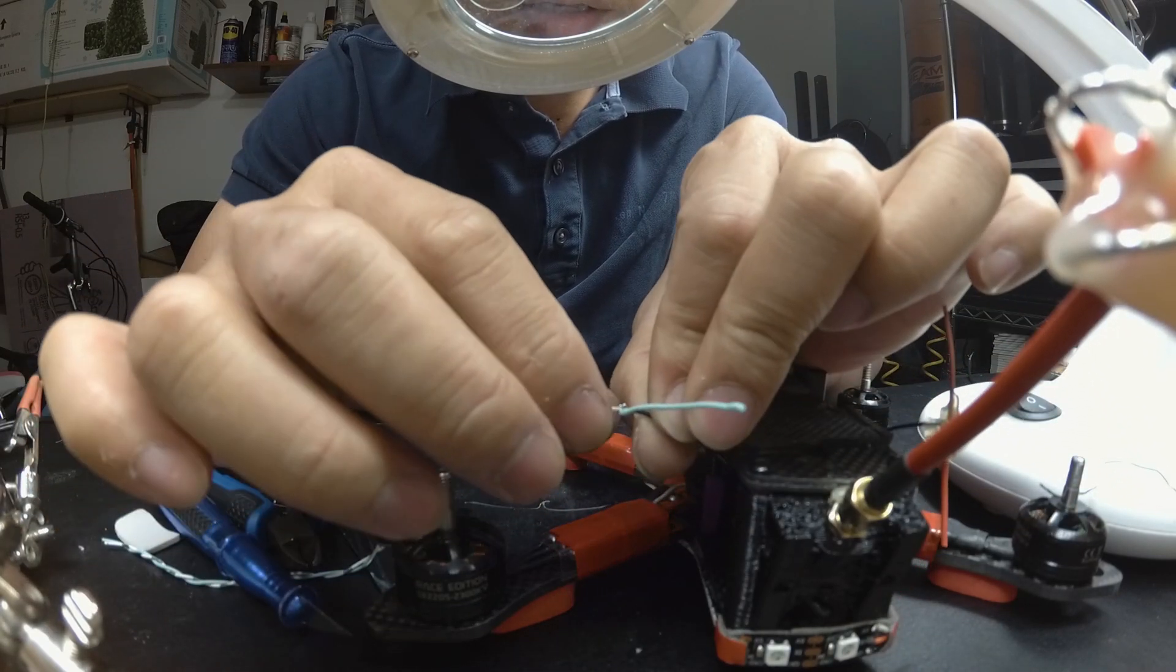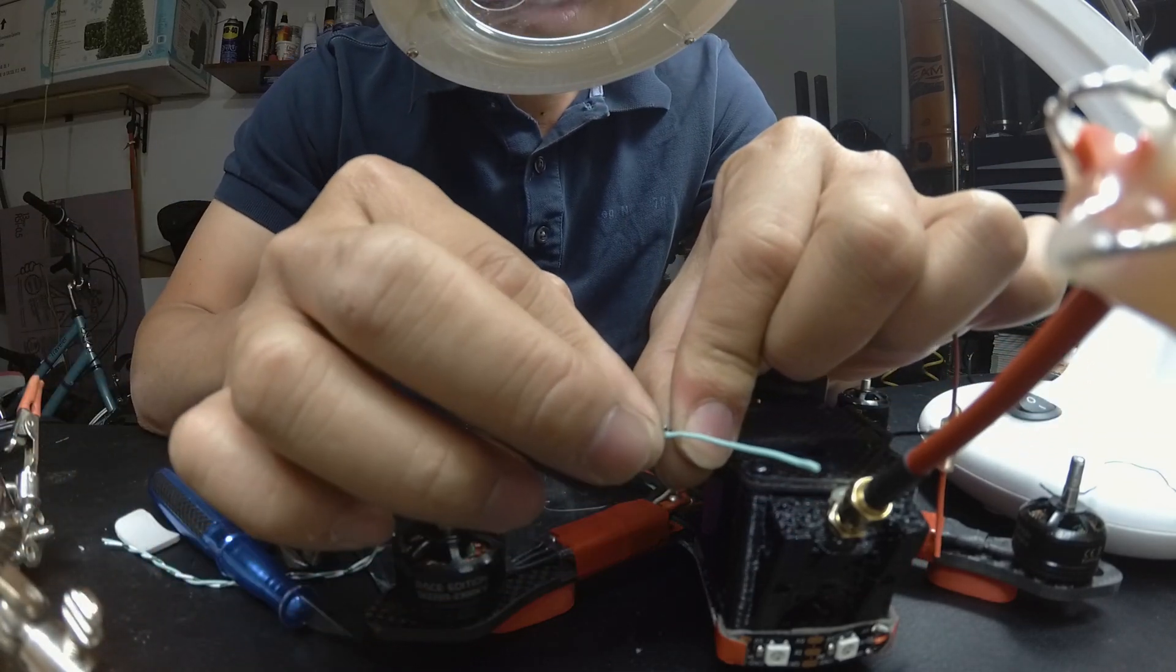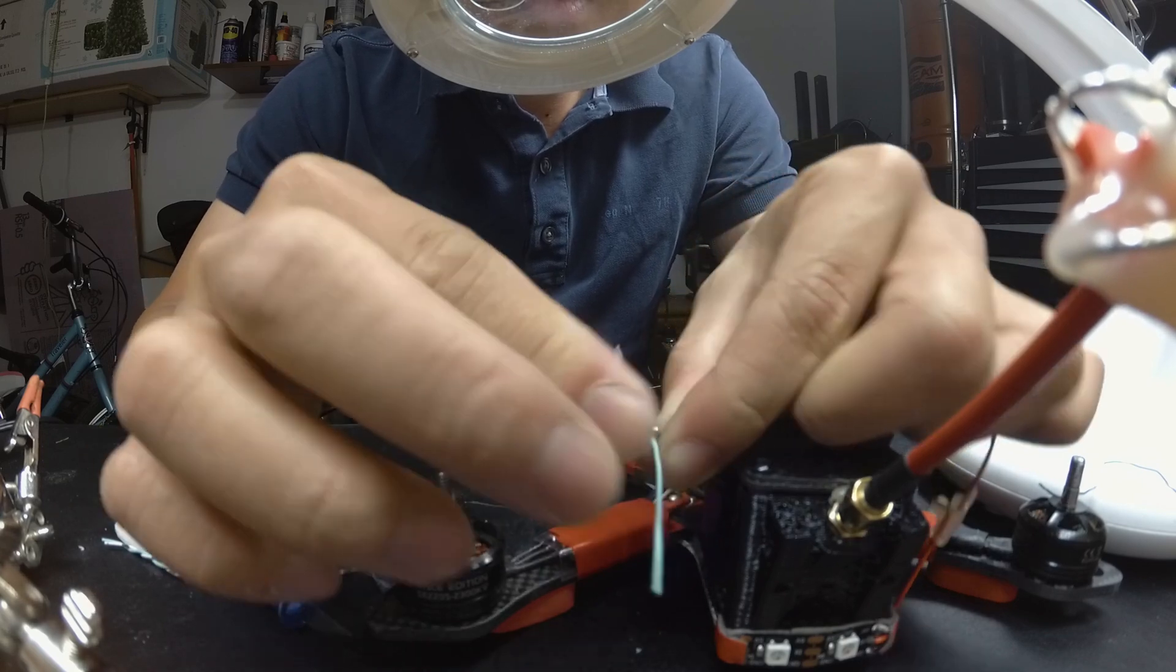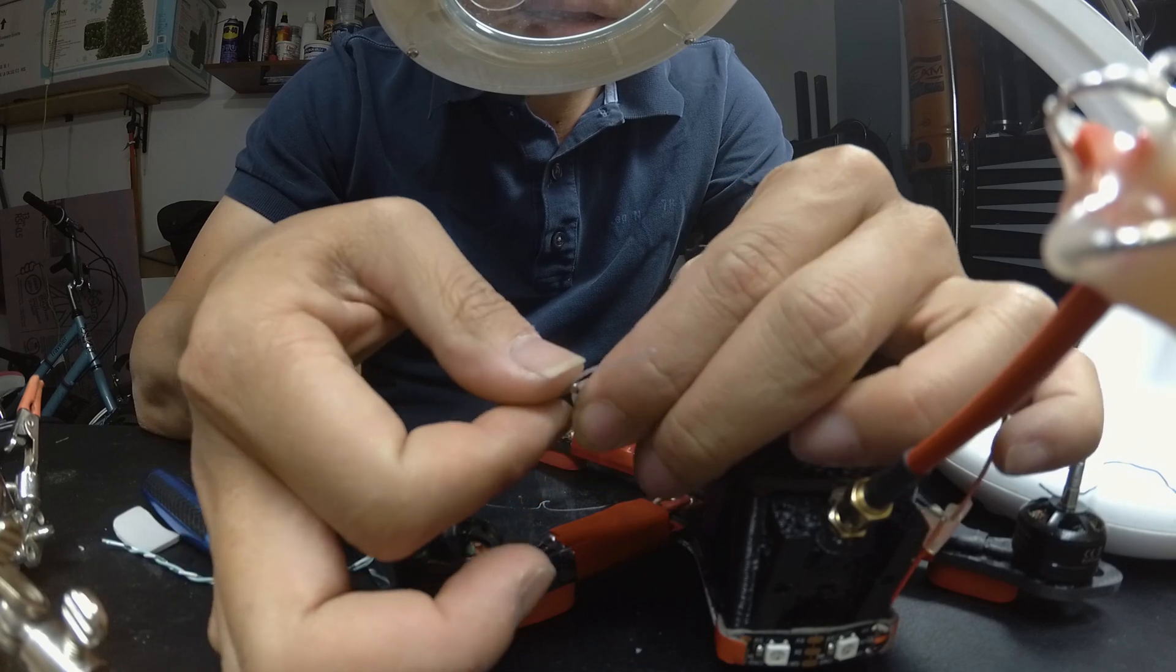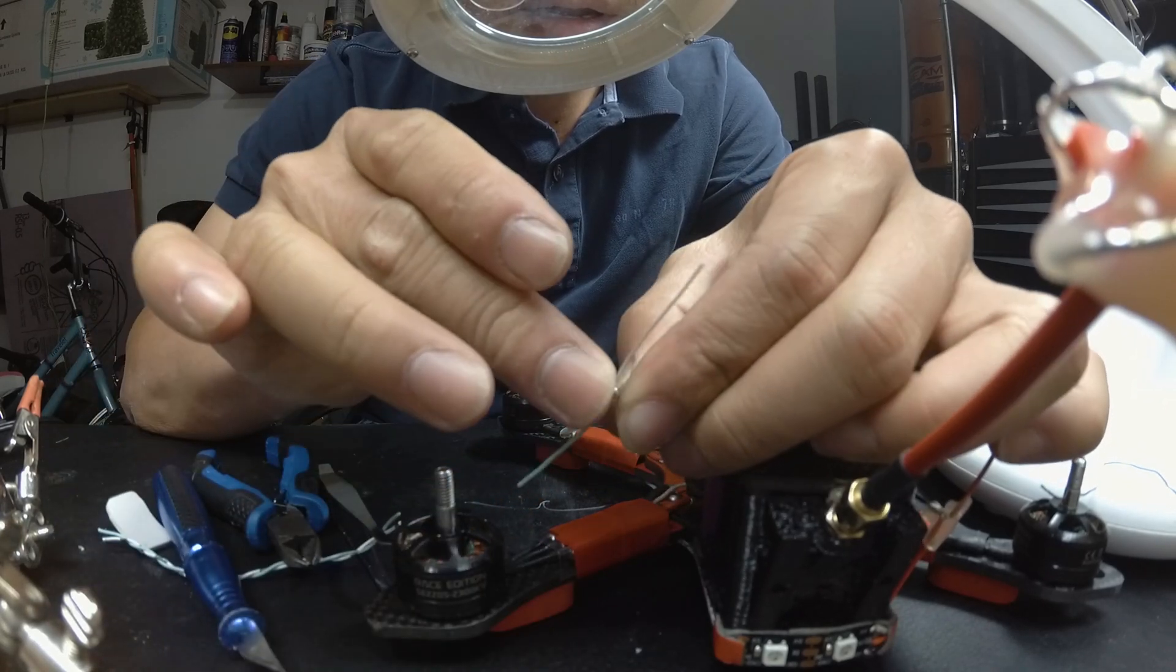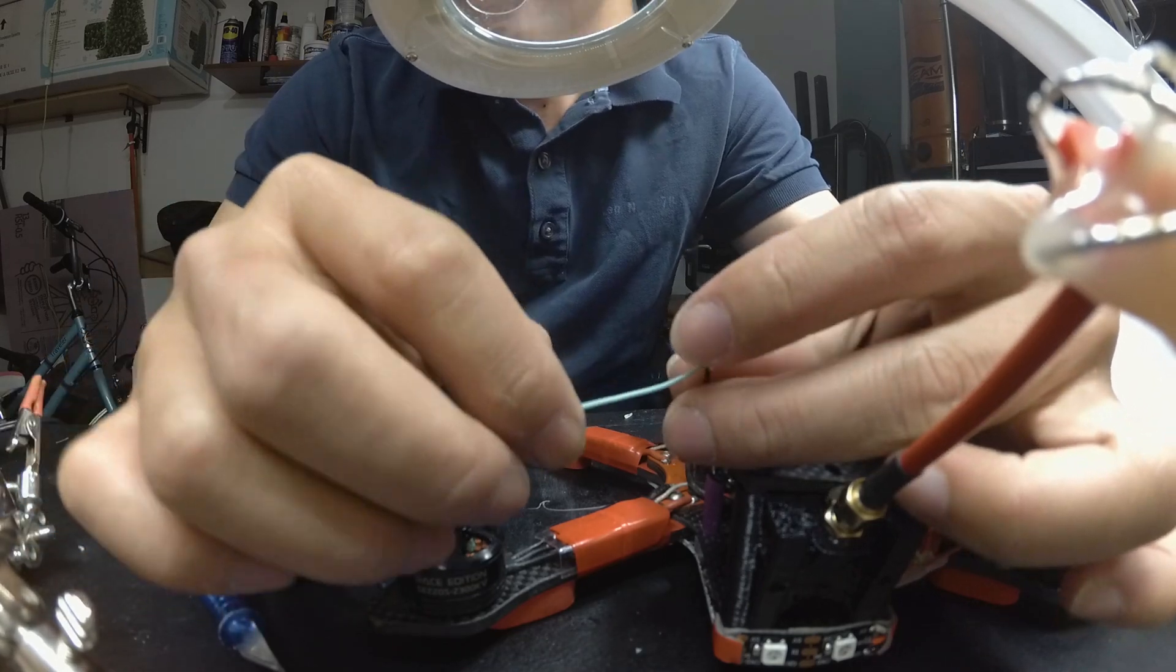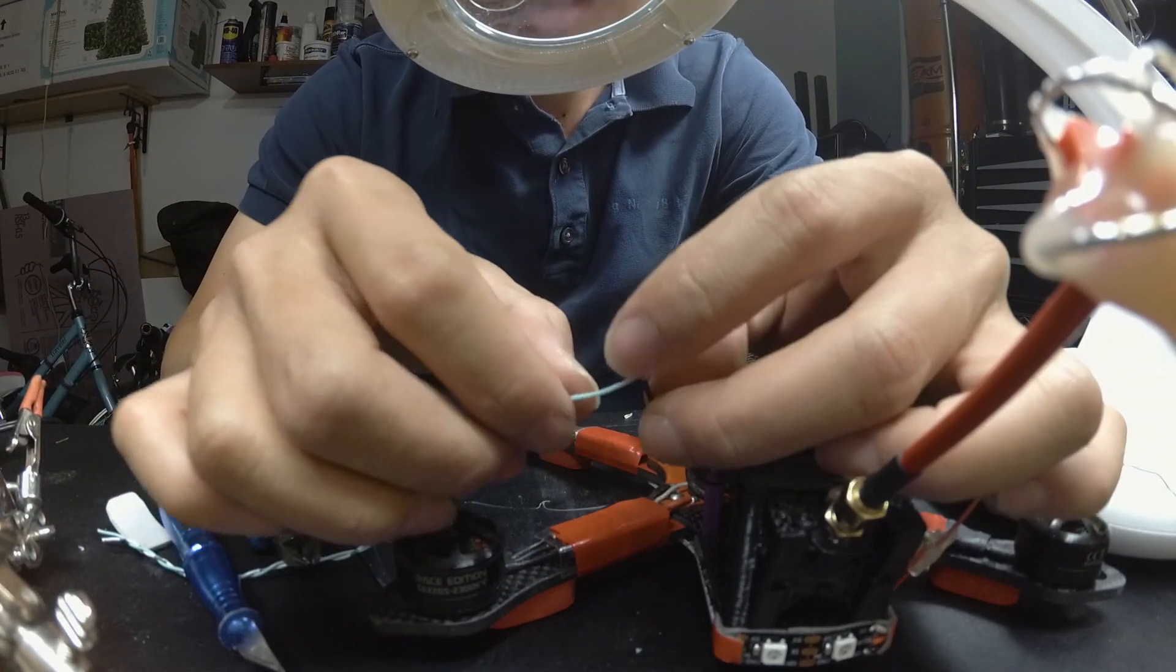And all you need is to bend this into a T shape like that. All right now you got a T shape. Now you can measure them to trim it into length, the correct length.